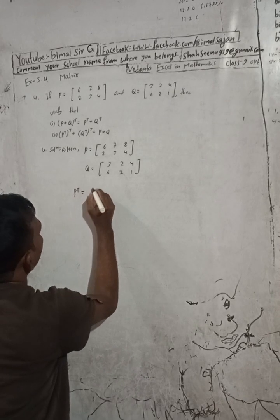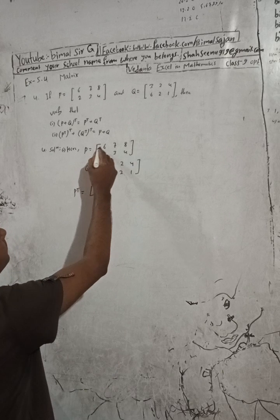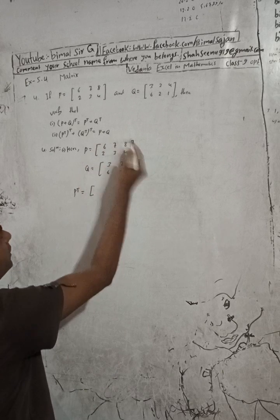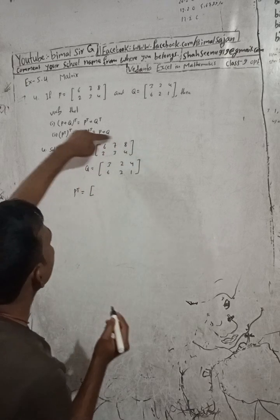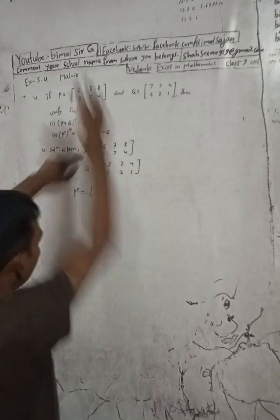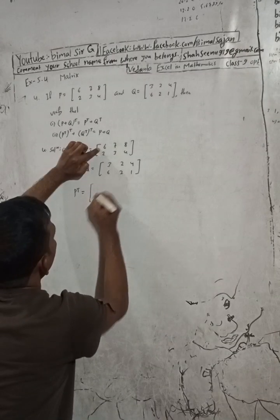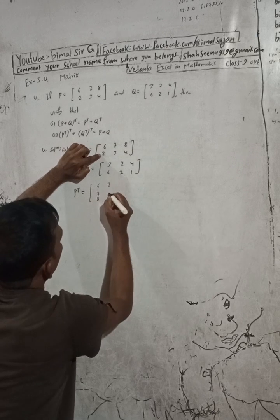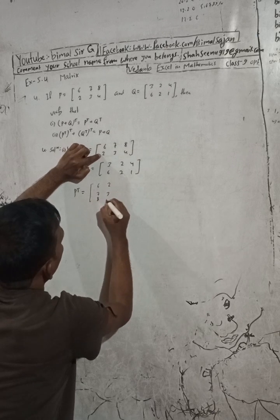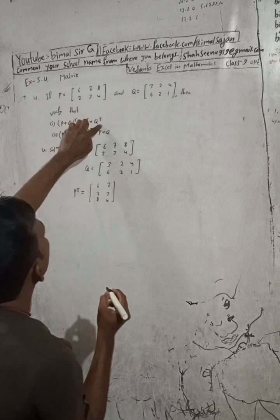P transpose is equal to — P transpose means just interchange the rows and columns. The first row is 6 7 8, so make it the first column: [6 / 7 / 8]. The second row is 2 3 4, so make it the second column: [2 / 3 / 4]. This is P transpose.